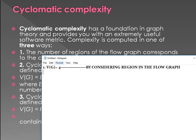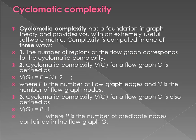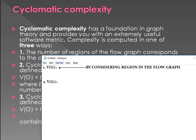This is the first way of knowing complexity. The second way of knowing the complexity: V(G) is the cyclomatic complexity. So V(G) in the second way is very simple — V(G) equals E minus N plus 2. What is E? E is edges. And what is N? N means nodes.